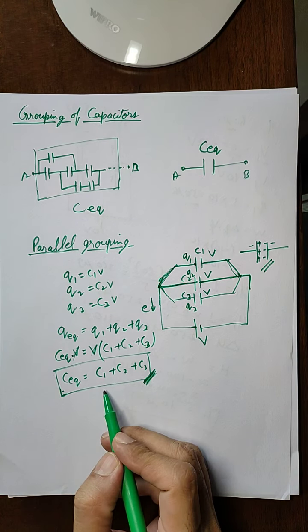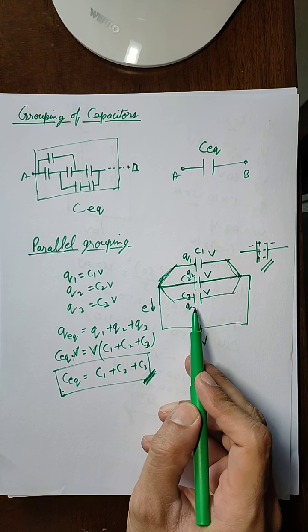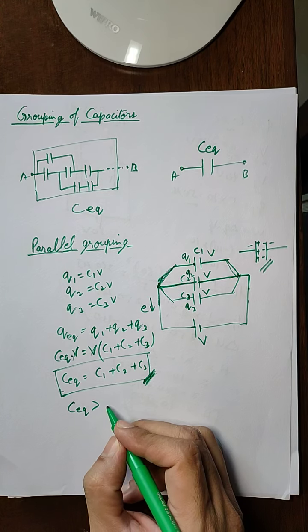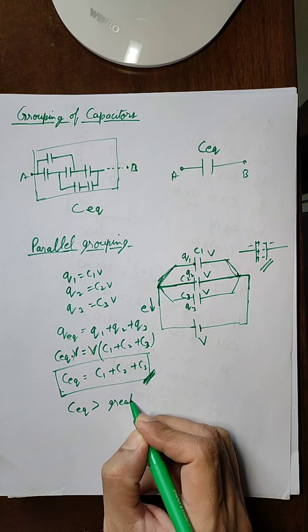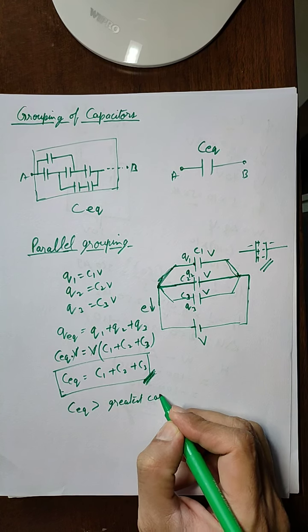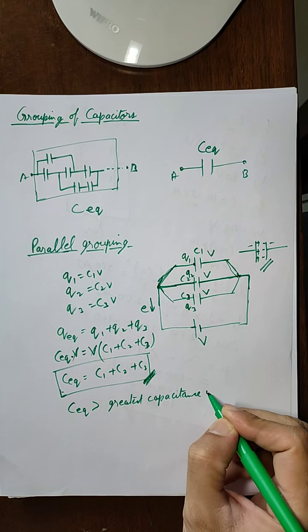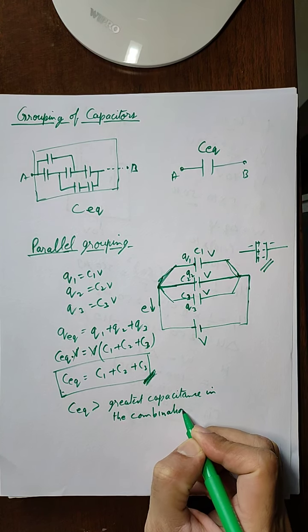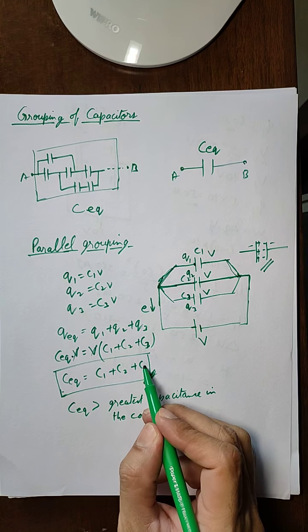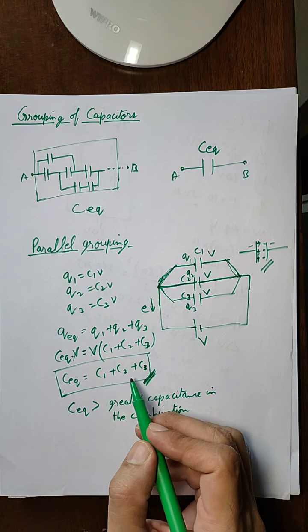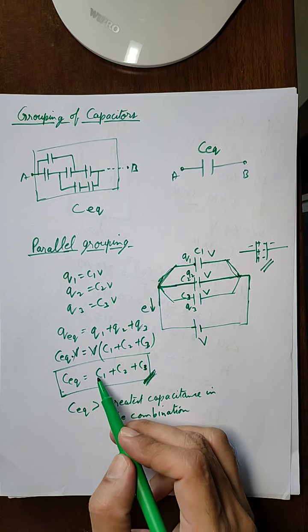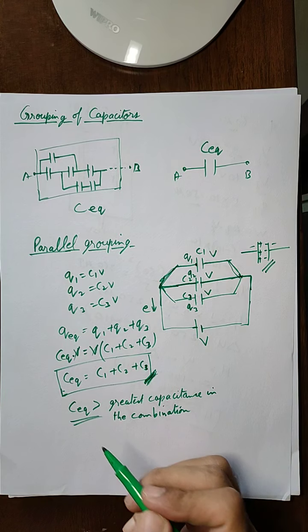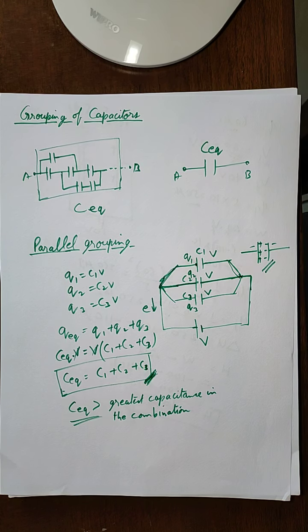We can see from this formula that if C1, C2, and C3 are given numerical values, then C_equivalent will be greater than the greatest individual capacitance in the combination. Because C_equivalent equals the sum of all capacitances, the total capacitance will be greater than each capacitance individually. This property is useful for solving conceptual questions.